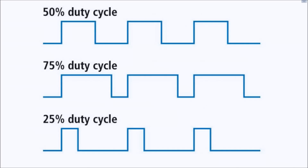Now let's say we want to control the brightness of an LED. We'd need digital to analog conversion — we have a brightness value expressed as an integer and we want to convert that into a fluctuating voltage. The problem is that generally microcontrollers don't provide a direct electronic way to do this, but what they do provide is pulse width modulation.